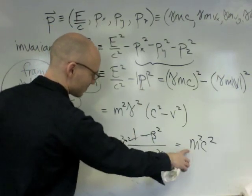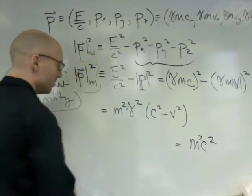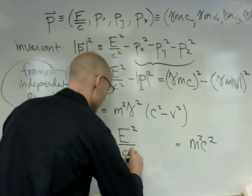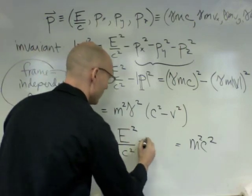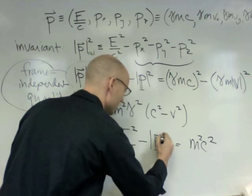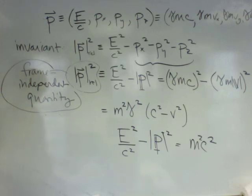So just to make myself some space. This is our final answer. So to make some space, I'm going to write down here E squared over c squared minus the magnitude of the 3 momentum squared is m squared c squared.